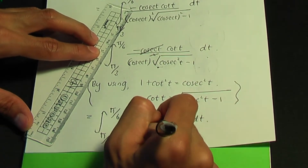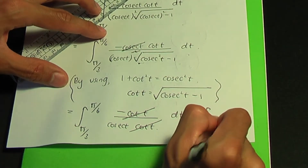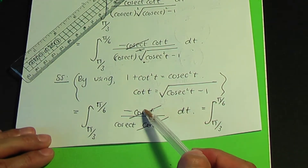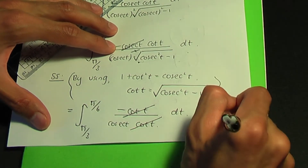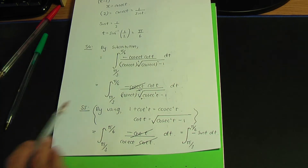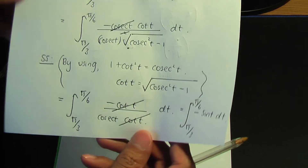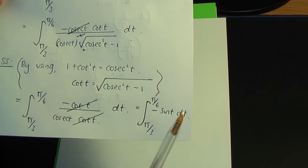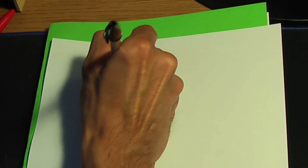The two cot t terms cancel, leaving us to integrate between π/3 and π/6 of minus 1/cosec t, which in trigonometry is minus sin t. So we integrate minus sin t with respect to t. Integrating sine gives minus cos, and the two minuses combine to give plus cos t.